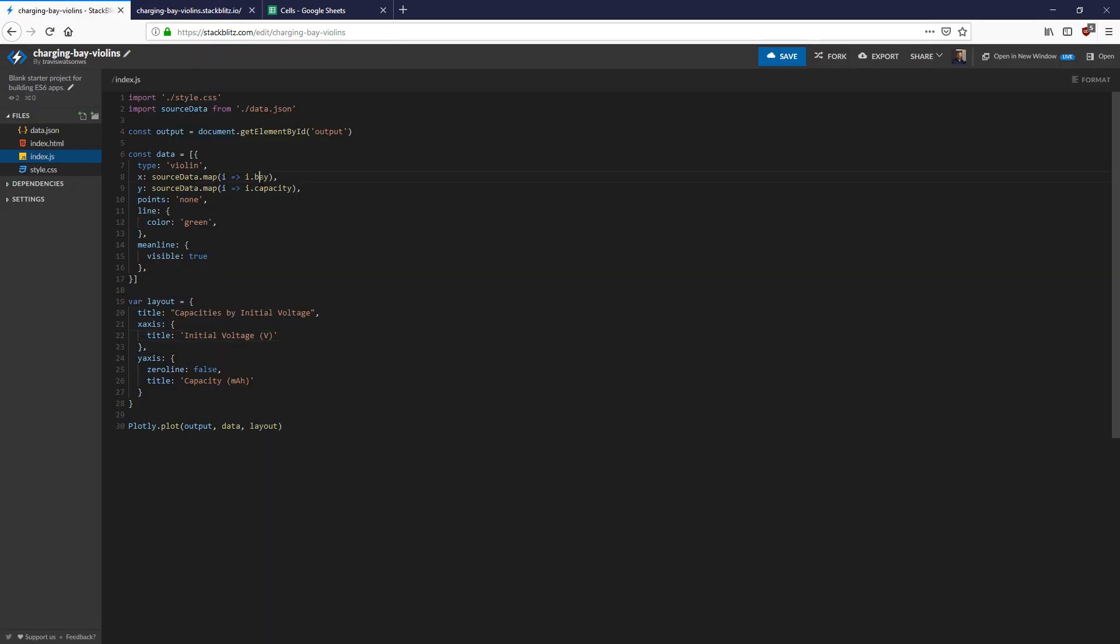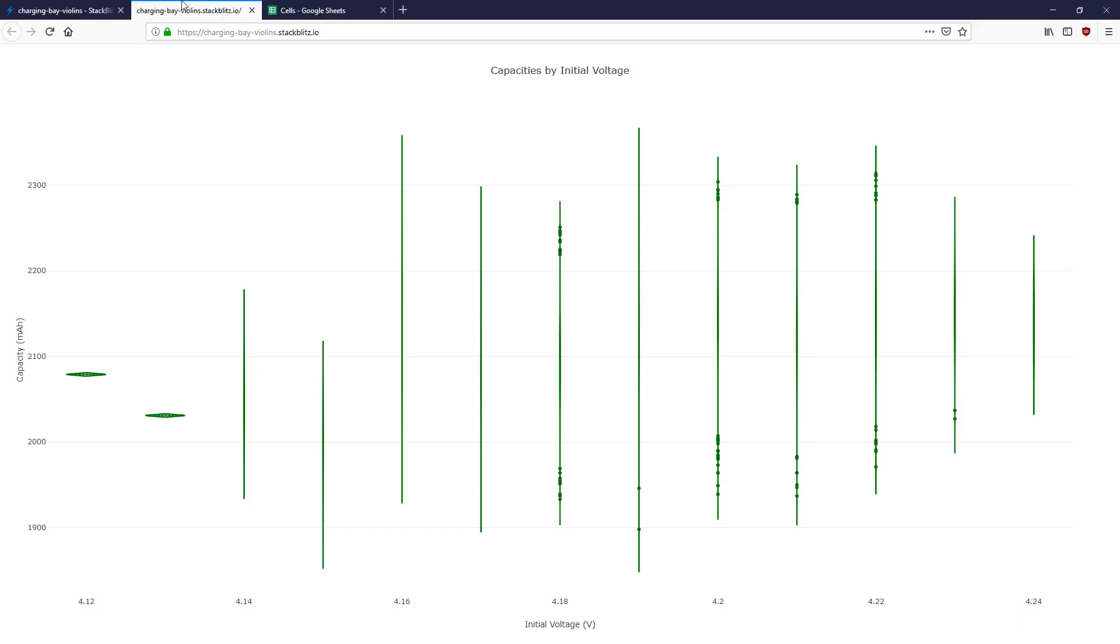So let's instead of separating this by bay, let's do it by initial charging voltage. Now we see we started at 4.14, for instance 4.16, but the actual distributions within there for the capacity, there's not really any strong correlation. Otherwise we'd see that bulge.